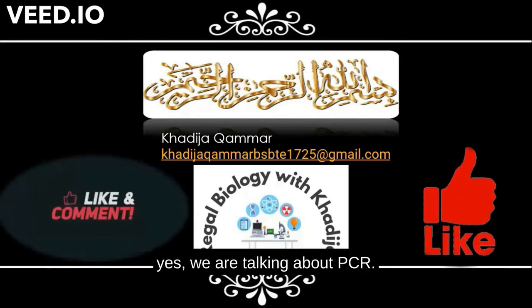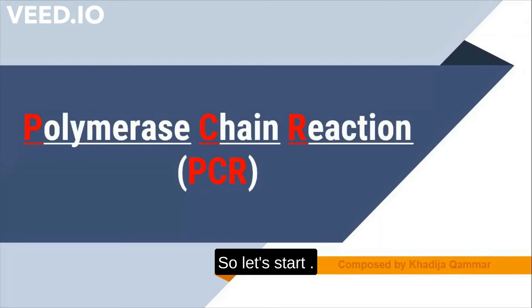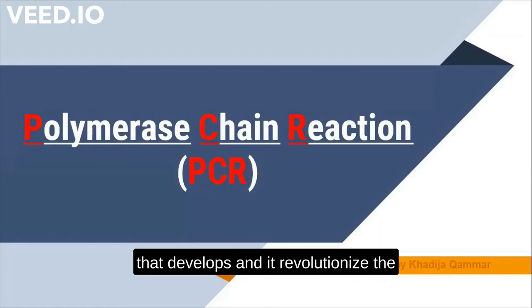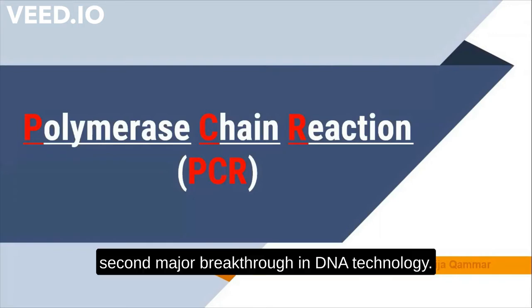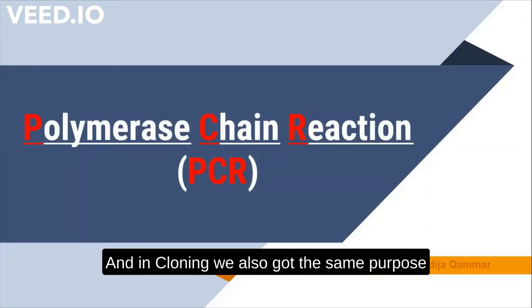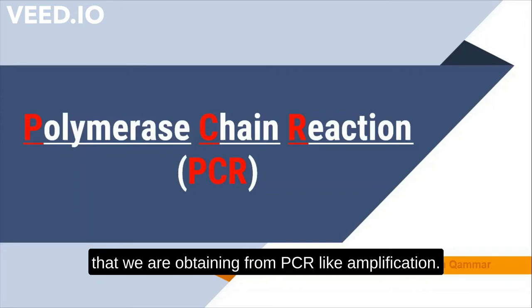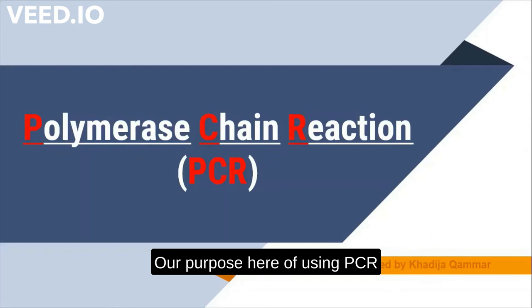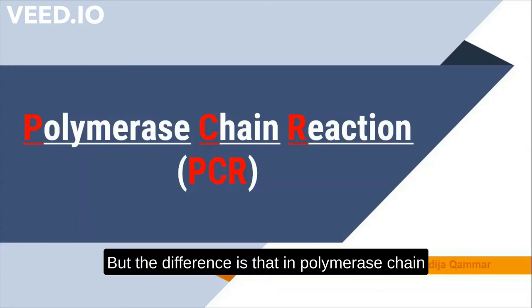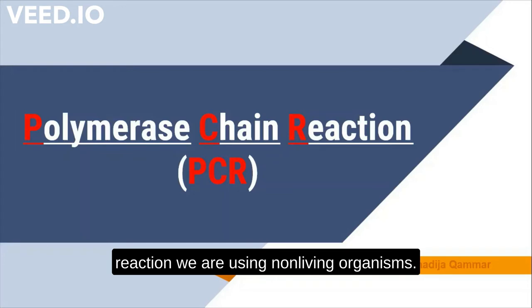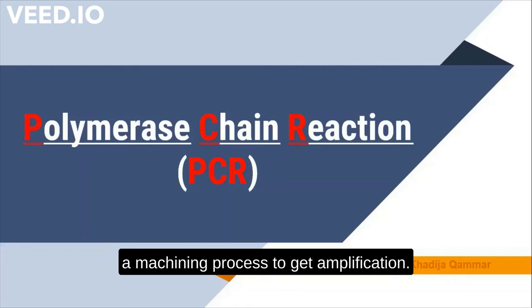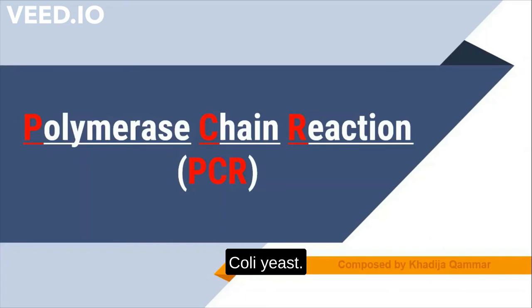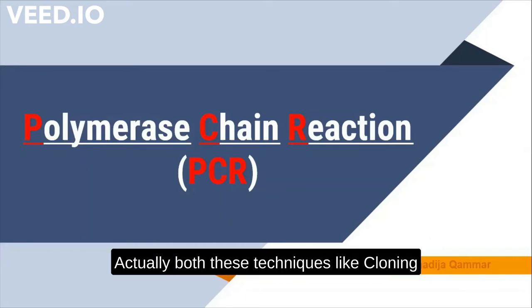We are talking about PCR — Polymerase Chain Reaction. It is a very important technique in molecular genetics and biochemistry. It represents the second major breakthrough in DNA technology, the first being cloning. Both cloning and PCR serve the purpose of amplification, but PCR uses a non-living, machine-based process, while cloning uses living organisms like E. coli and yeast.